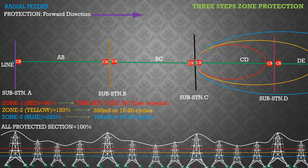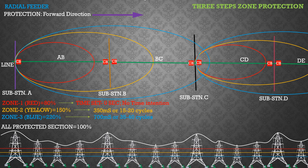There are definite time discrimination steps among the zones of protection. Since the protection is based on impedance for particular fault locations and particular operating times, the zone of protection is selective, and the distance protection relay issues a trip for a fault within the selective zone only.